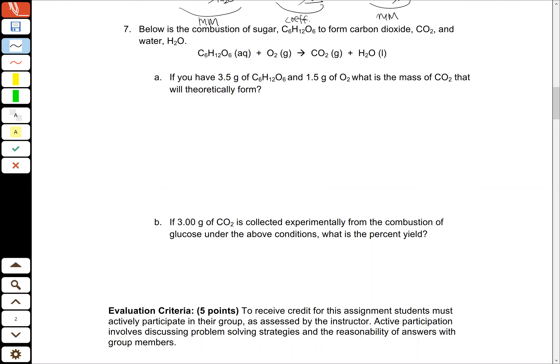We are going to finish working through our problem set for chapter 5 material by completing the last problem, which is a big one. This is looking at the combustion of sugar to form carbon dioxide and water. This is something you could do by introducing a flame and oxygen and burning it like you would a campfire, or this is something your body does in a stepwise fashion to take energy from the sugar by converting it into carbon dioxide and water.